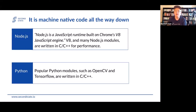So Node.js achieved high performance today not because it's a JavaScript runtime — it's despite its use of JavaScript. Most of the heavy lifting is done by native machine code in C and C++. The same thing happens in Python. If you do heavyweight machine learning and AI applications, you often use Python as the interface, but all your Python calls actually get translated into native modules written natively in OpenCV and TensorFlow. All those libraries and modules are written in C++ and compiled to machine code.